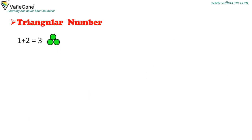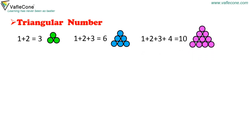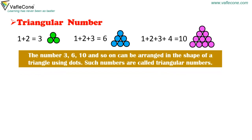1 + 2 = 3. 1 + 2 + 3 = 6. 1 + 2 + 3 + 4 = 10. The numbers 3, 6, 10, and so on can be arranged in the shape of a triangle using dots. Such numbers are called triangular numbers.